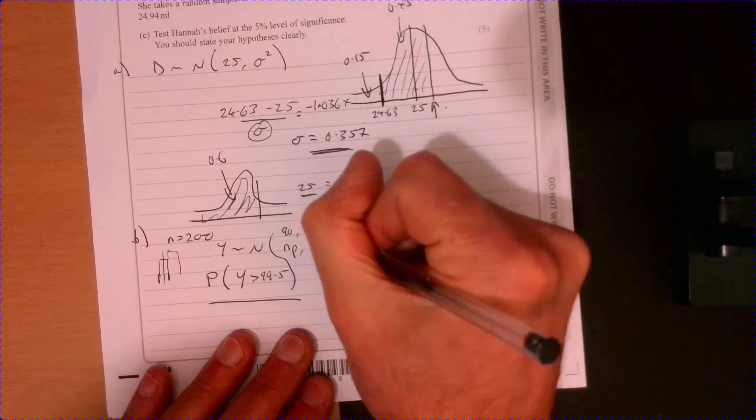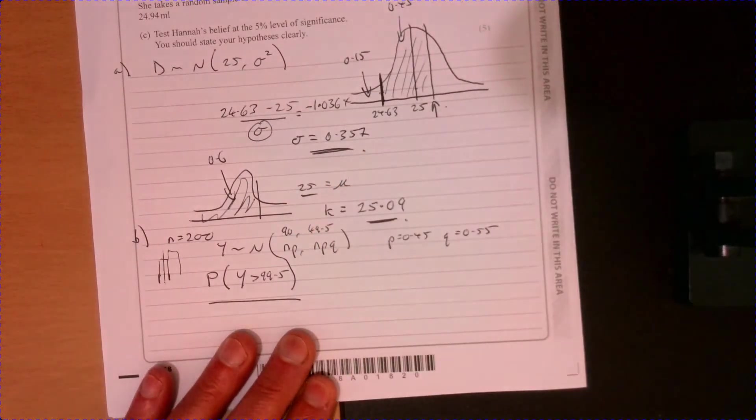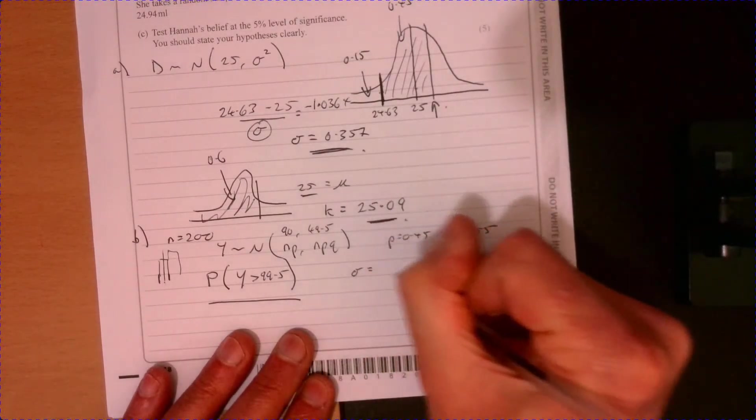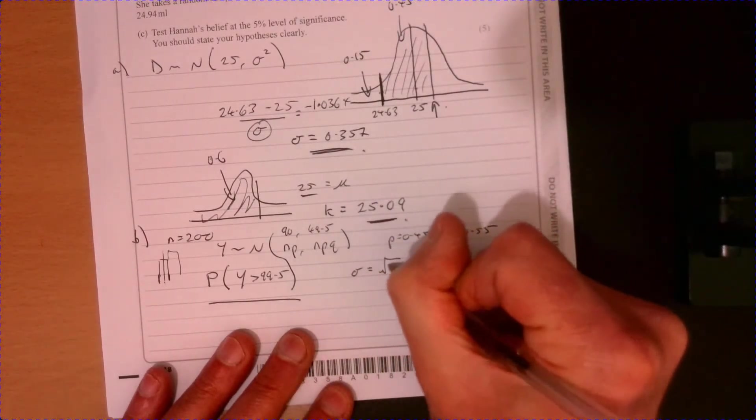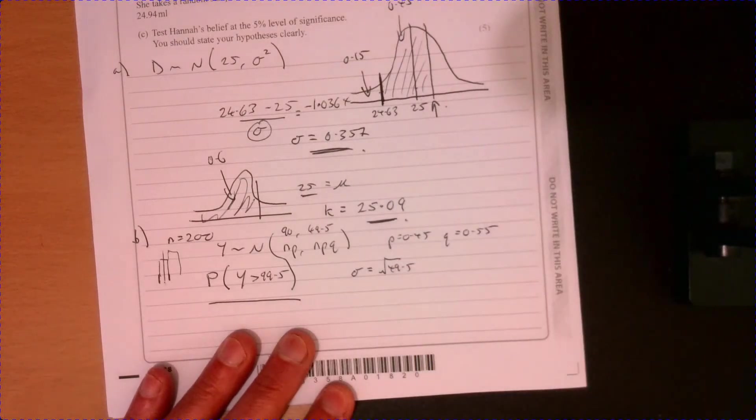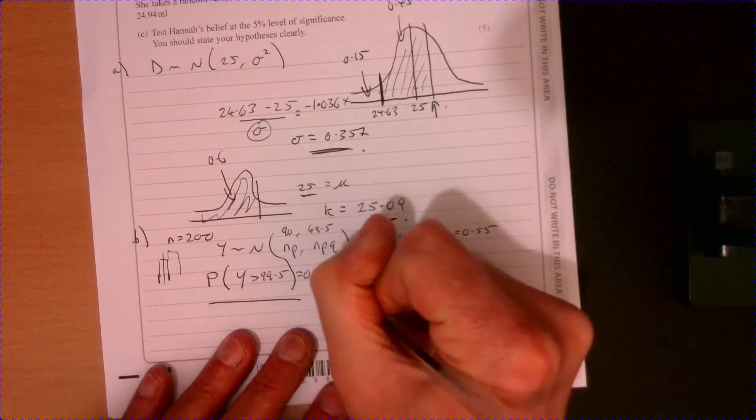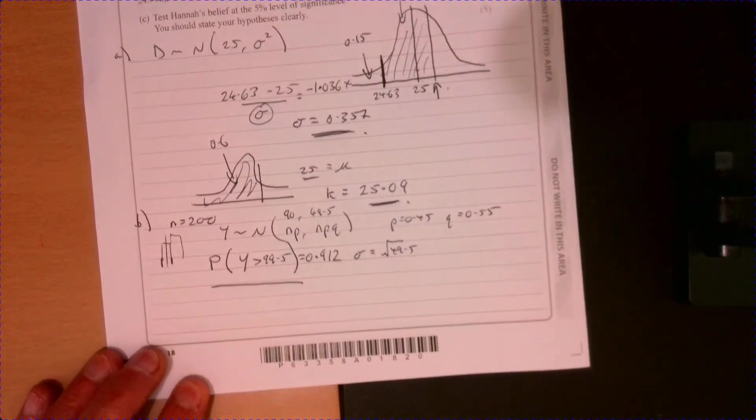So if you plug in what we need here, that works out to be 90. That works out to be 49.5. Remember, that's the variance. You've got to square root that for the standard deviation. So the standard deviation would equal root 49.5. Plug that lot in and we get 0.912 just there.